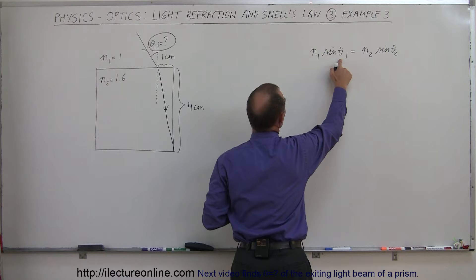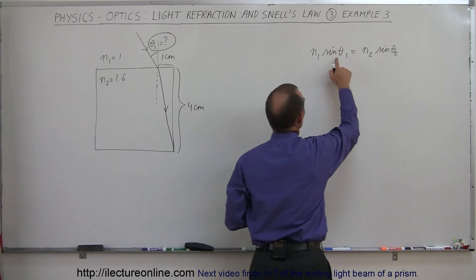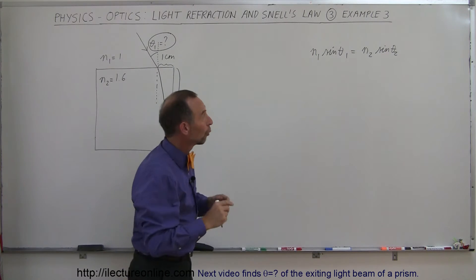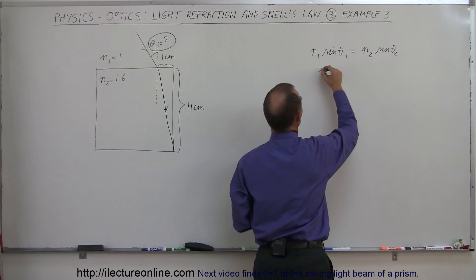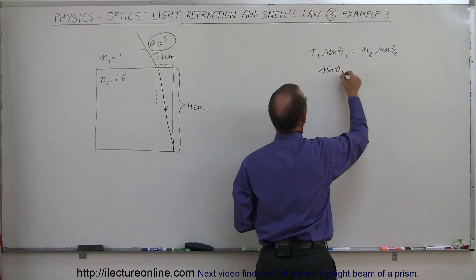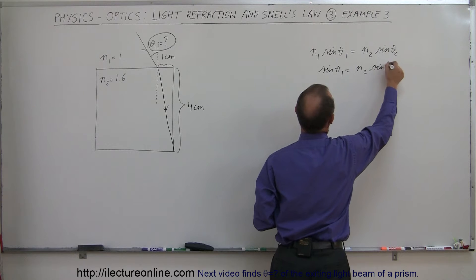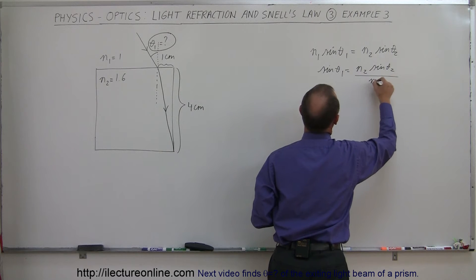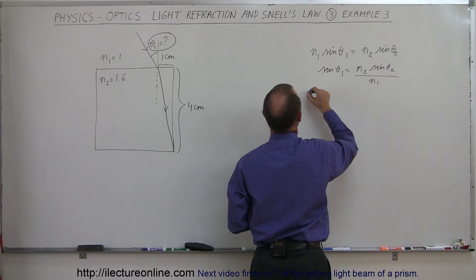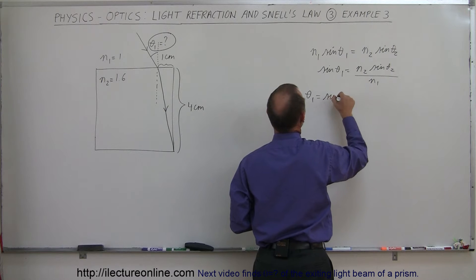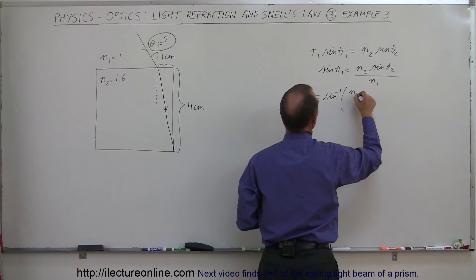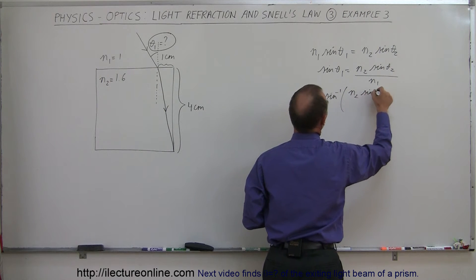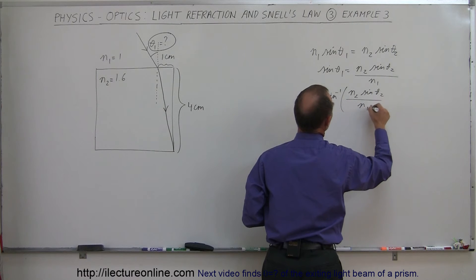Since we don't know what the incident beam is, that's what we're looking for, we're going to solve Snell's equation for theta1. So we can say that sine of theta1 is equal to n2 times sine of theta2 divided by n1, therefore theta1 is equal to the arcsine of n2 sine of theta2 divided by n1.